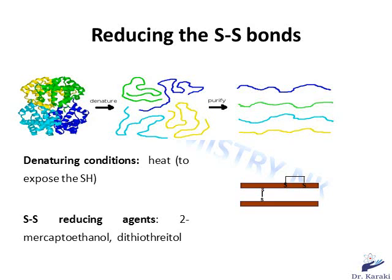After determining the N- and C-terminal residues, it's important to reduce the disulfide (SS) bonds. These bonds can exist between two cysteines within the same chain — called intrachain bonds — or between two cysteines in two different chains — called interchain bonds. Reducing the SS bonds is important whether the protein is made of one or more subunits. If it has a quaternary structure, reducing SS bonds will separate the subunits into individual polypeptide chains. If it has only a tertiary structure, reducing SS bonds exposes amino acids more to the action of endopeptidases used to fragment the chains.